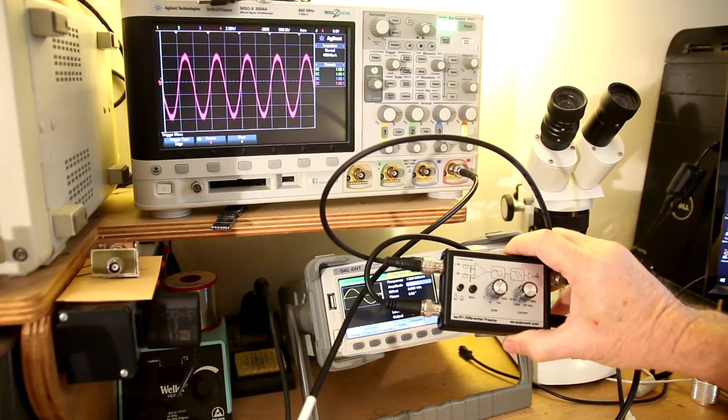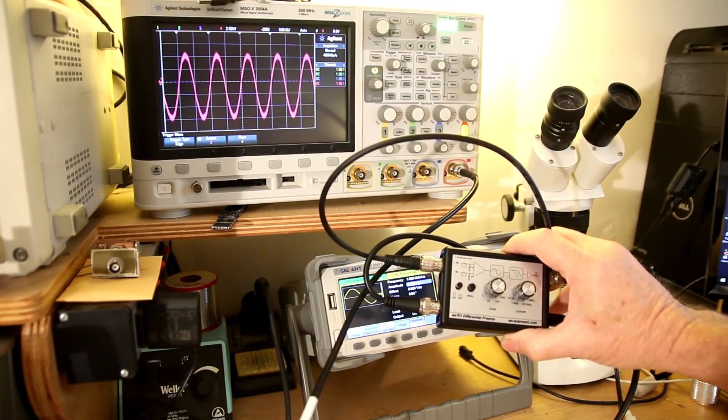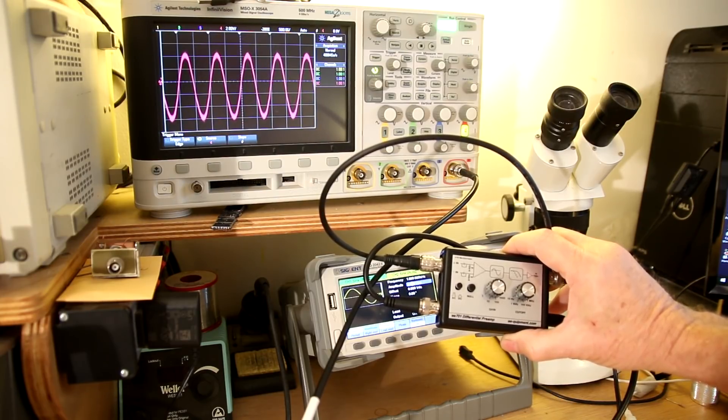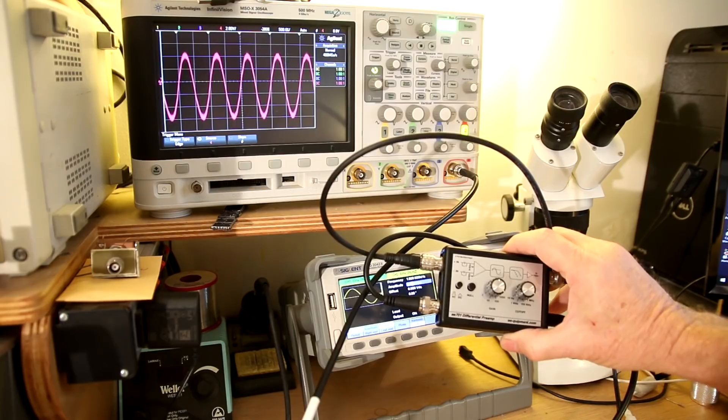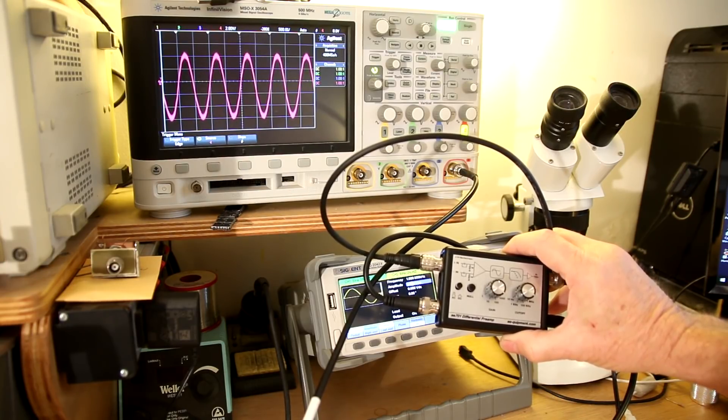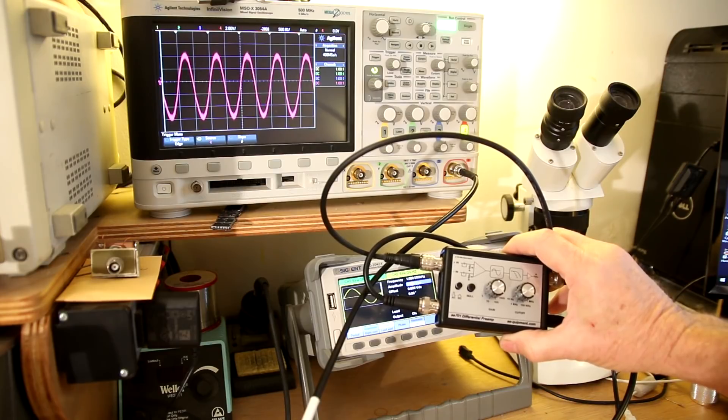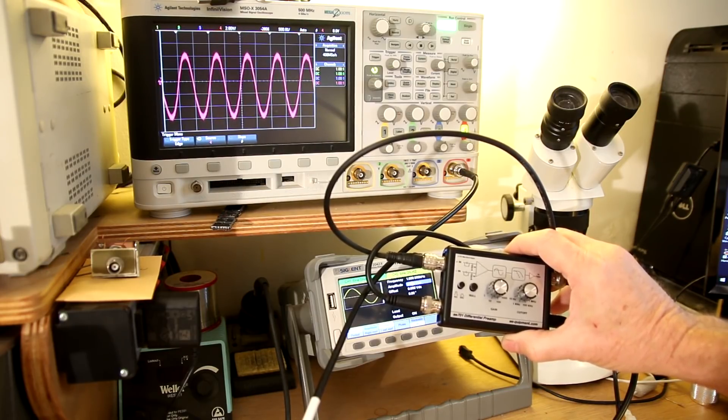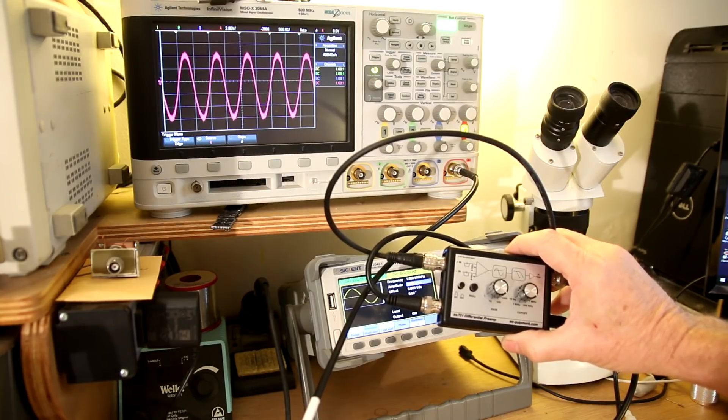To recap from episode 19, here's the EE701 fed by two sine waves from my arbitrary waveform generator. Both are in phase, one set to 4 volts and the other to 4.01 volts. That's just a tiny 10 millivolt difference. With the preamp's gain set to 1000, you can see the scope, which is set to 2 volts per division, shows that 10 millivolt difference quite prominently.